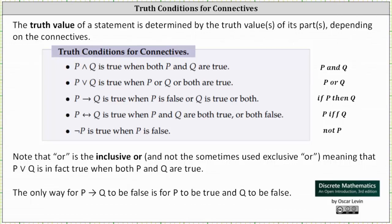Welcome to a lesson on truth conditions for connectives. The truth value of a statement is determined by the truth value or values of its parts, depending on the connectives. Let's look at the truth conditions for the following five connectives.